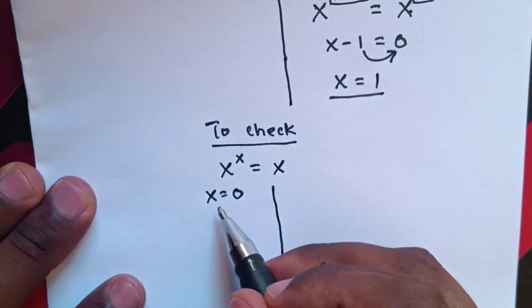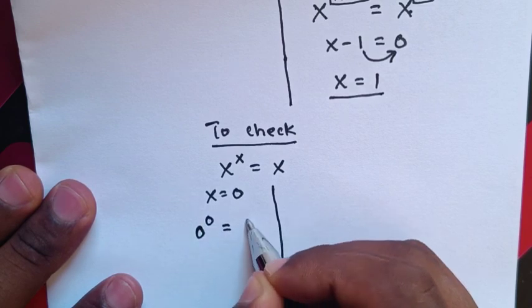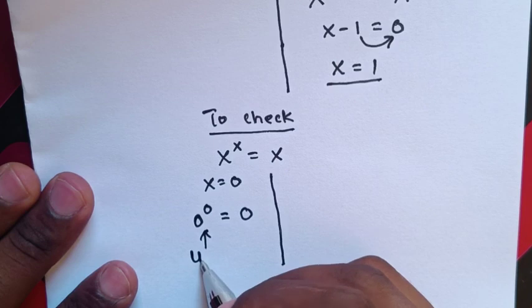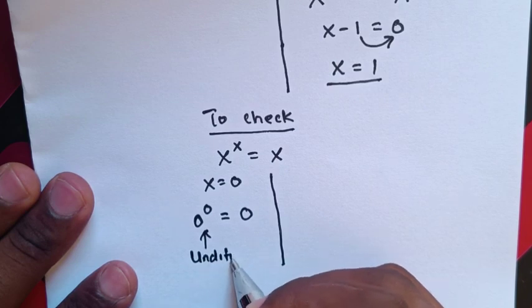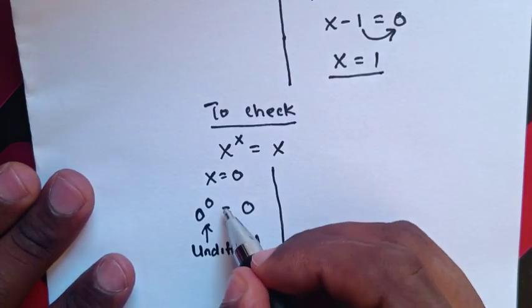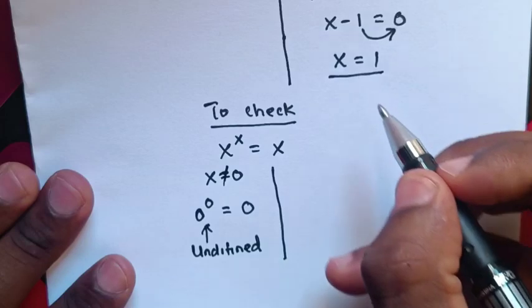So, when we substitute x = 0, it will be 0^0 = 0, but 0^0 is undefined. So, x is not equal to 0, so this is not the answer.